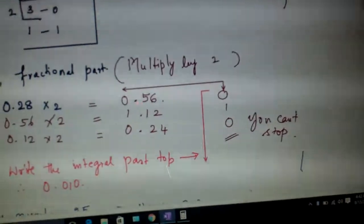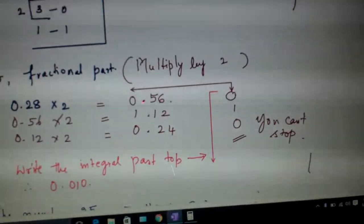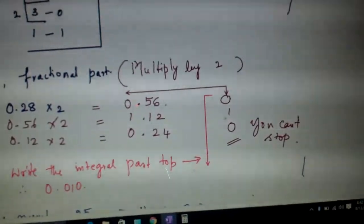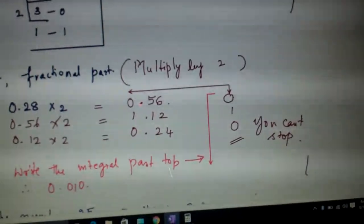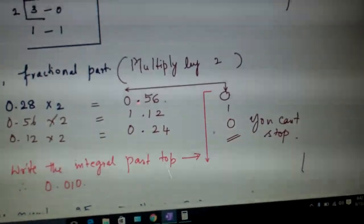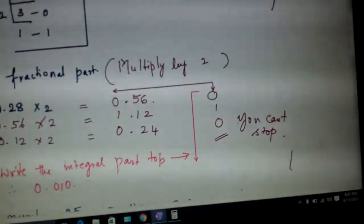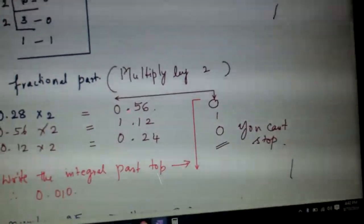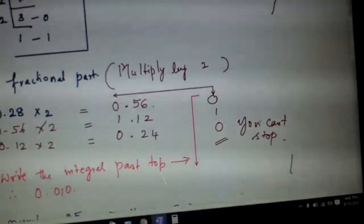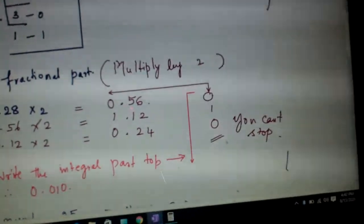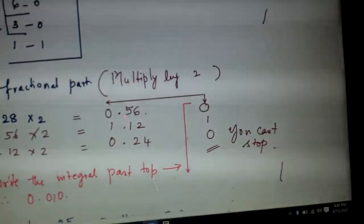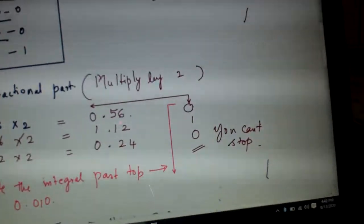So that will be written here. Now consider only 0.56 into 2, that is 1.12. Then this is written here, 0.12 is written here. Multiply it with 2, this is what you're getting. Now write the integral part in this order. Here we wrote remainders in this order, now we are writing it in this order, reverse order, top to bottom. There we have divided, here we are multiplying. That is the difference.